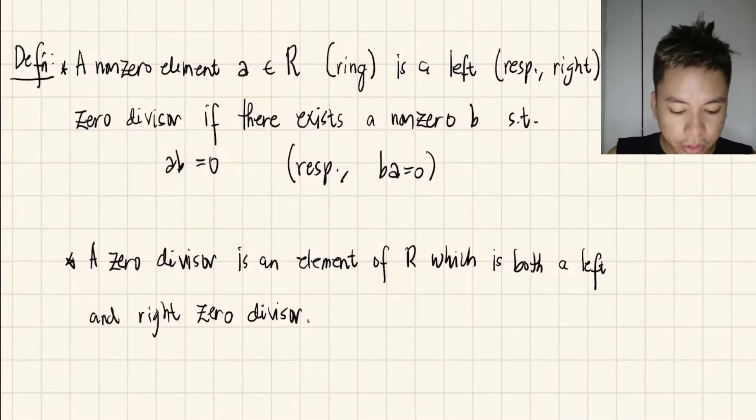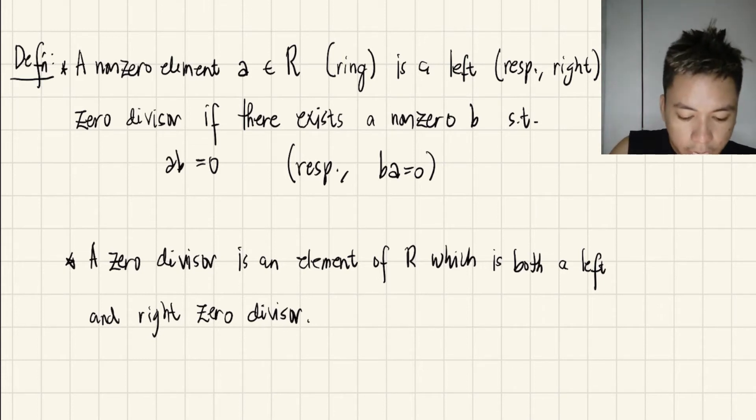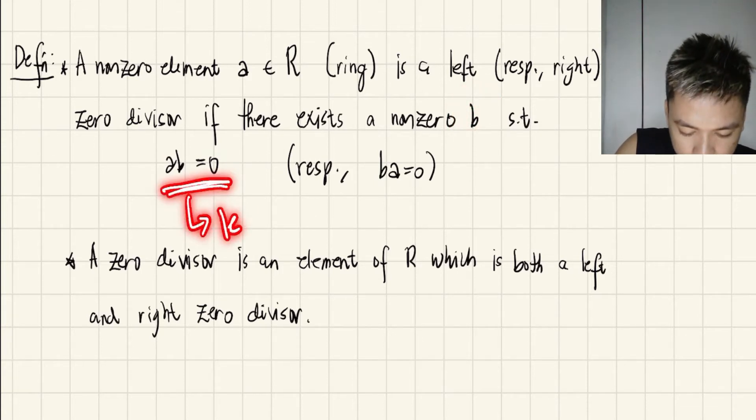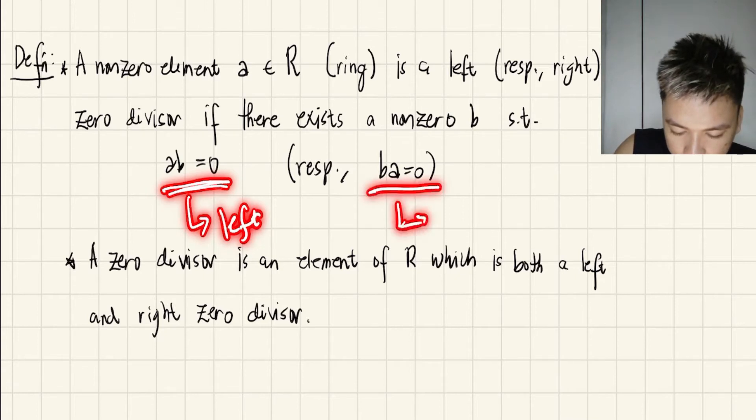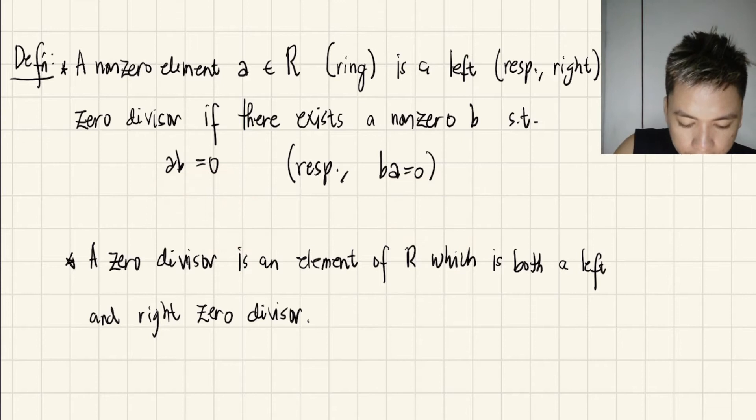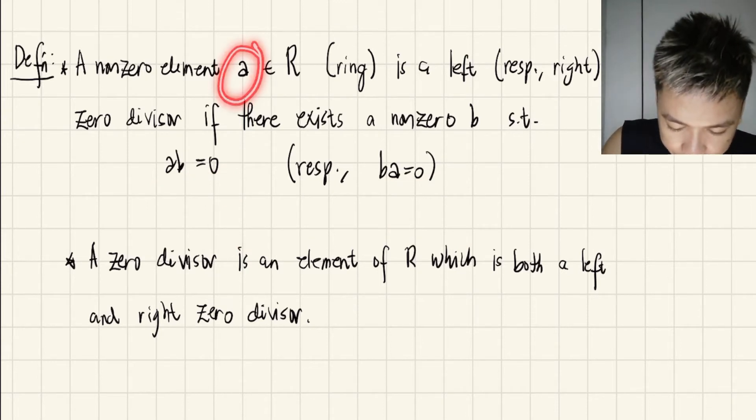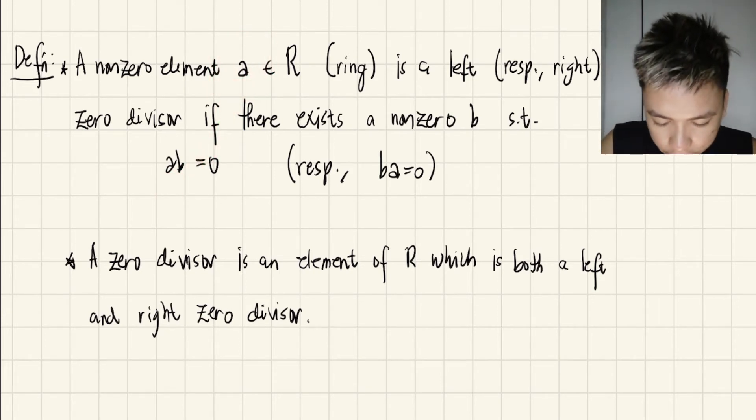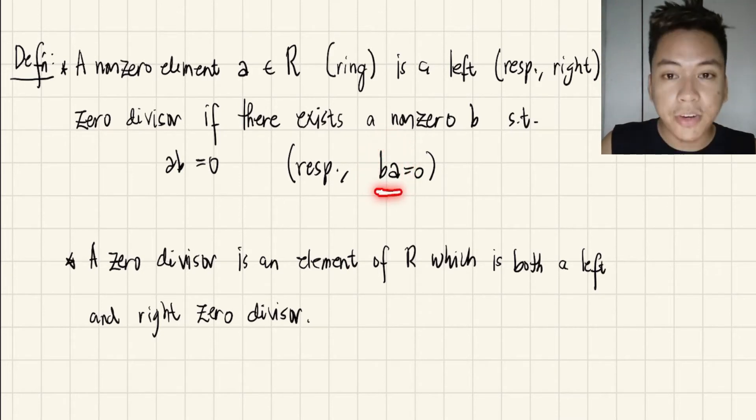Okay, so let's start now with the definition of the Zero Divisor. It says here that if you have a non-zero element A of a ring R, this A is said to be left, respectively right, Zero Divisor if there exists a non-zero B such that AB equals zero or BA equals zero. This one represents the left, and this one represents the right. So meaning to say, A is considered as left zero divisor if A is on the left of B. And B is the right zero divisor if A is on the right of B.